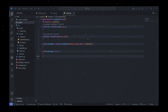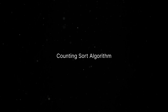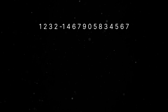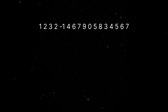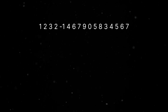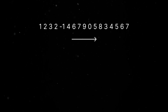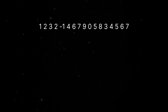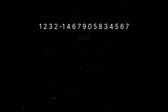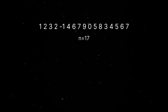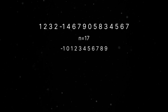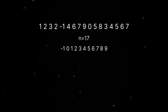The secret sauce here is called the counting sort algorithm. Let me break it down. Imagine you've got a bunch of numbers all mixed up in a list — some numbers show up more than once and it's a bit of a mess. The mission is to clean up the chaos and put these numbers in order from smallest to biggest. There's a twist too: some numbers might be negative just to keep things interesting. First, we figure out how many unique numbers we've got. Let's call that N. If N is 17, we've got 17 numbers ranging from 0 to 9.